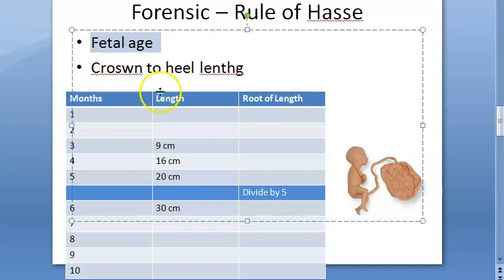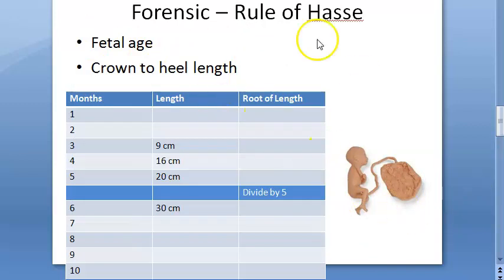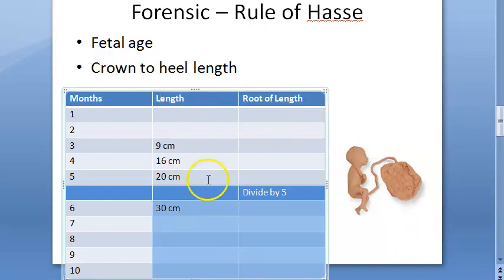To estimate fetal age, you have to check the crown-to-heel length. Pay attention — the length is crown to heel, not crown to rump as in radiology or ultrasound. Here you're taking the complete length of the baby from crown to heel, which you can stretch on a flat surface to measure.